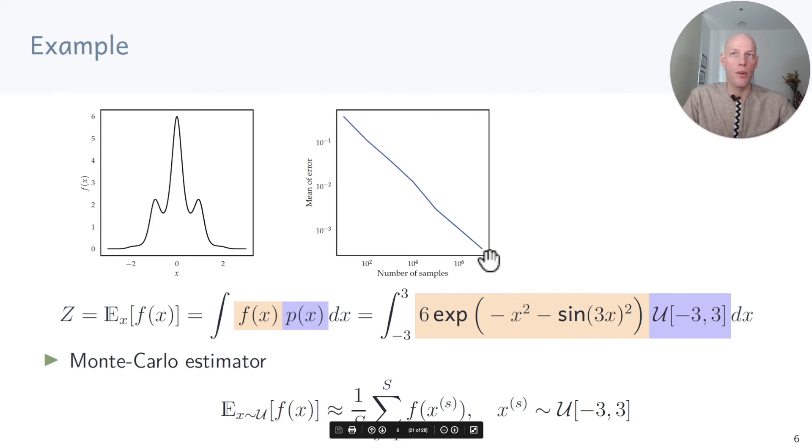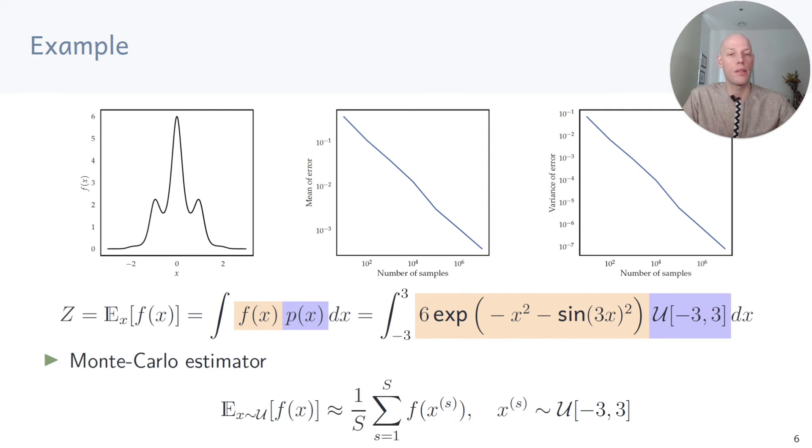What we see here is that as a function of the number of samples, the estimation error goes down and so does the variance of the estimator. But if we remember back to numerical integration, we also realize that Monte Carlo estimation needs quite a few more function evaluations than numerical integration, where we could push the integration error down to 10 to the minus 3 with about 10 function evaluations,